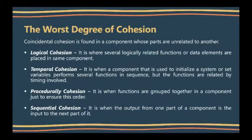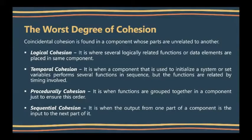The worst degree of cohesion is coincidental cohesion, found in a component whose parts are unrelated to one another. Logical cohesion is where several logically related functions or data elements are placed in the same component. Temporal cohesion is when a component used to initialize a system or set variables performs several functions in sequence, but the functions are related by timing. Procedural cohesion is when functions are grouped together in a component just to ensure a specific order. Sequential cohesion is when the output from one part of a component is the input to the next part.